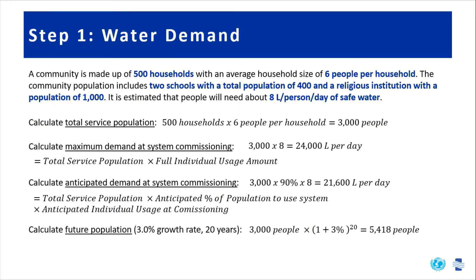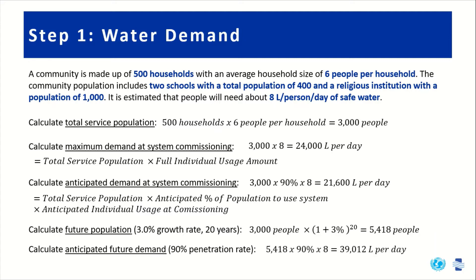Lastly, we can also consider the future population. Considering a 3% growth rate over 20 years, we can estimate that there will be 5,418 people in 20 years, considering this exponential population growth function. And lastly, we can calculate the anticipated future demand. Again, considering a 90% penetration rate where 90% of the community will use the water, we get 39,012 liters per day.